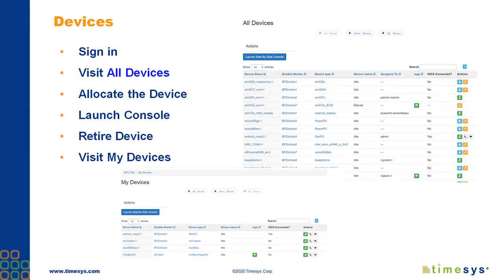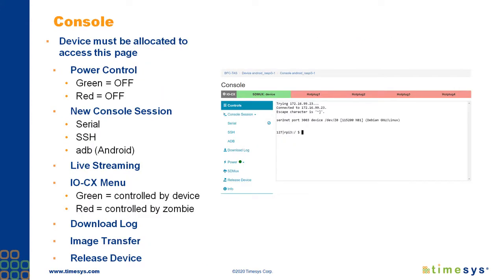You can then launch a remote console. You can retire a device. You can also see who else has access to a device. You can control the power state of a device — turn the device on and off remotely. You can access a console session over the serial port or SSH.